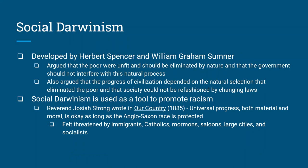The Gilded Age saw an interesting philosophy called Social Darwinism, developed by Herbert Spencer and William Graham Sumner. The easiest way to understand it: the poor were poor for a reason. It's like survival of the fittest — the poor should be eliminated by nature because they're weak, and the government should not help the poor.